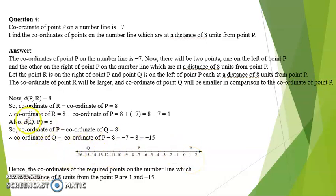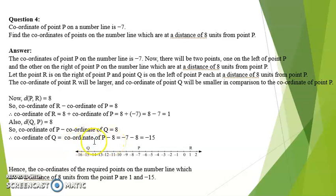On the other side, distance QP is 8. Since P is greater, coordinate of P minus coordinate of Q equals 8. So coordinate of Q equals coordinate of P minus 8, which is minus 7 minus 8, giving minus 15. Hence the coordinates of the required points on the number line which are at a distance of 8 units from P are 1 and minus 15.